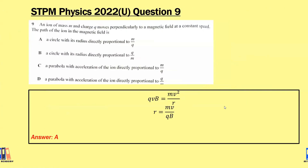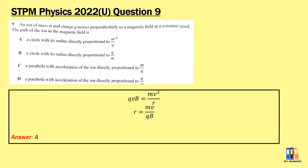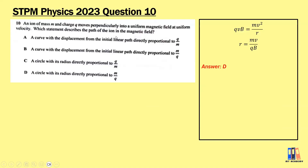Let's go to the question in the 2022 Ulangan paper. An ion of mass M and charge Q moves perpendicularly to a magnetic field at a constant speed. The path of the ion in the magnetic field should be a circle, and using the formula R equals mv over qB, the radius is directly proportional to m over q. The answer is A. A similar question in past year paper 2023 also gives answer D, with the circular path radius directly proportional to m over q.